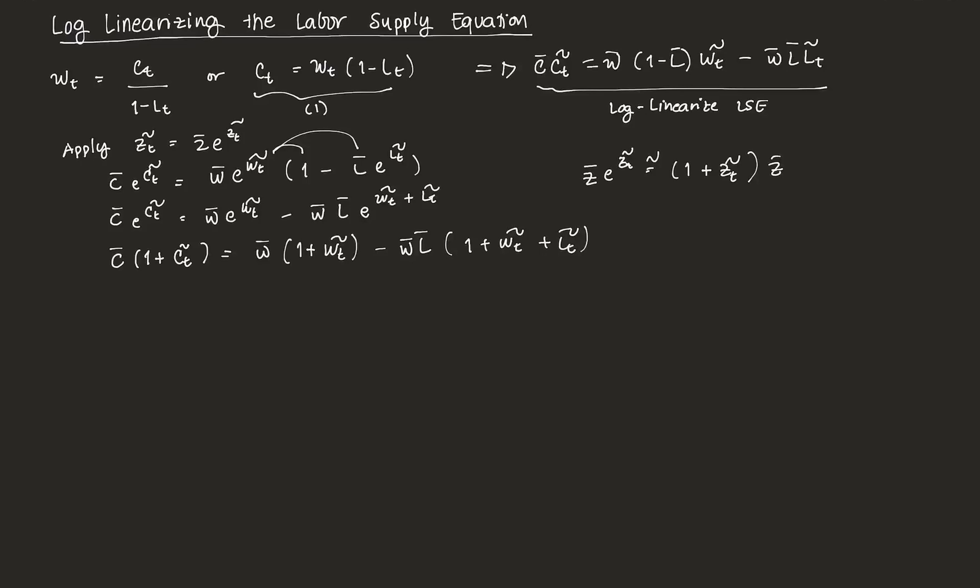Then, if you recall, at a stationary state or at a steady state, the labor supply equation is essentially, W bar equal to C bar over 1 minus L bar.